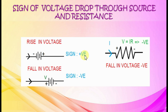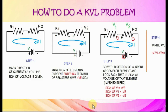How to do a KVL problem. First, mark the direction of currents as desired. Then mark the sign of elements — give current-entering terminal of resistors a positive sign. Go with the direction of current, cross each element and look back. The sign you see is the sign of voltage across that element. As in the figure, the voltage source becomes positive and V1 and V2 become negative. Then write KVL as shown.